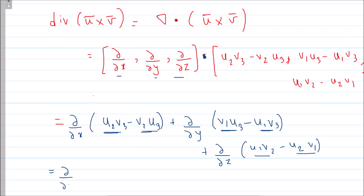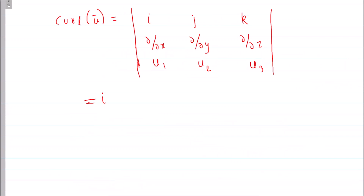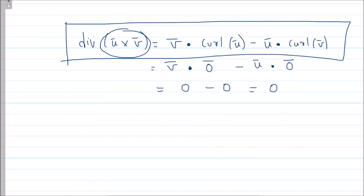Applying the product rule, for example, ∂/∂x(u2·v3) expands to u2·(∂v3/∂x) + v3·(∂u2/∂x), and similarly for all other terms. After full expansion, this is the LHS. Now let's compute the RHS by finding curl(u) and curl(v).